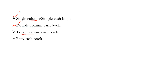Under a triple column cash book, there will be three amount columns where cash, bank, and discount columns will be maintained. Whenever discount is received or discount is allowed, that will also be recorded in the triple column cash book.